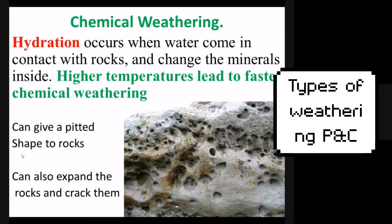Higher temperatures actually lead to faster chemical weathering, because the chemical reactions that take place with chemical weathering run at a faster rate when temperatures are higher. So you're likely to find more chemical weathering in a place like Florida than in a place like Antarctica, just because the chemical reactions happen faster.